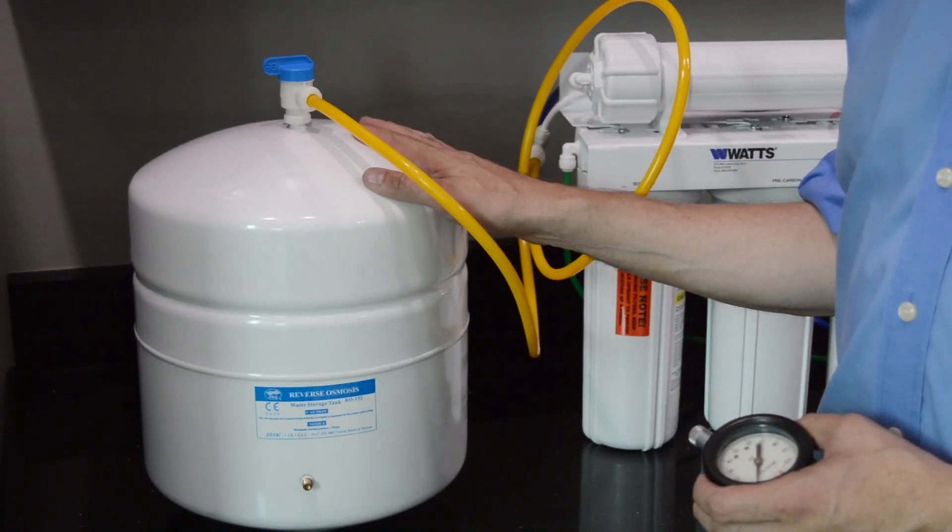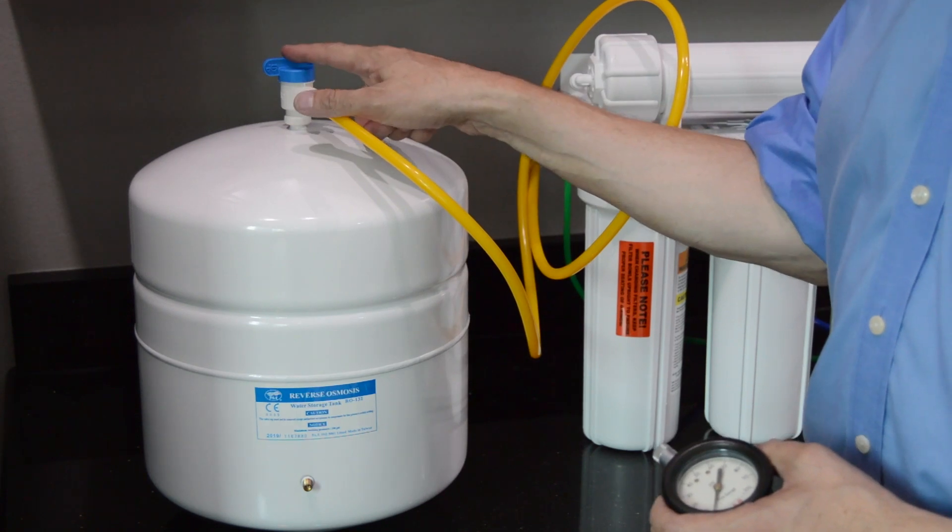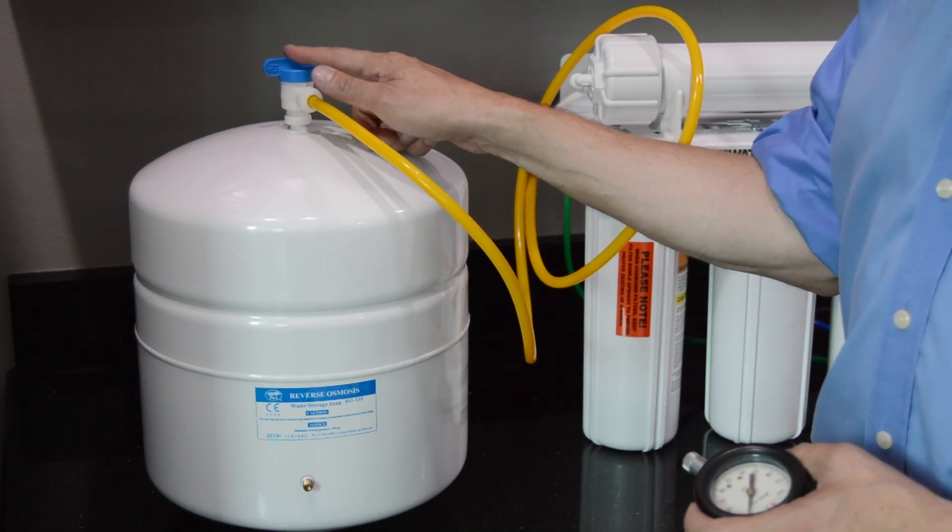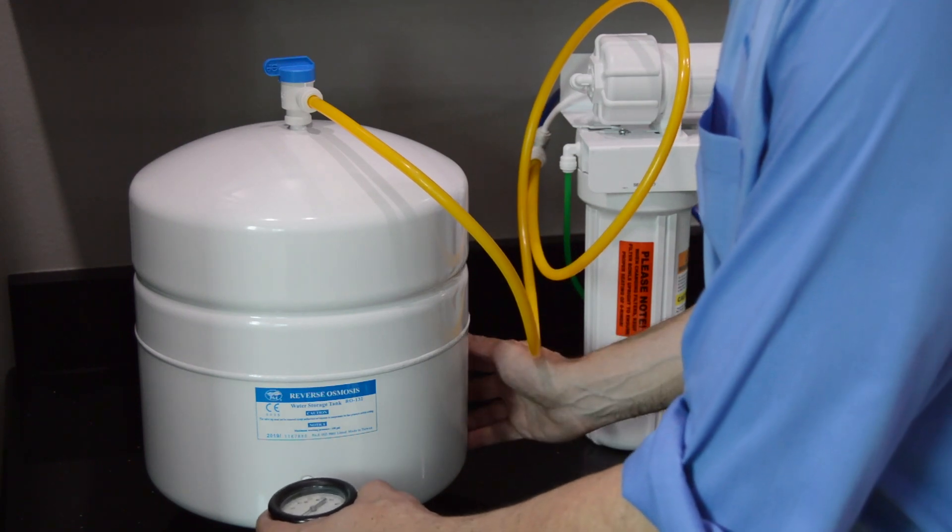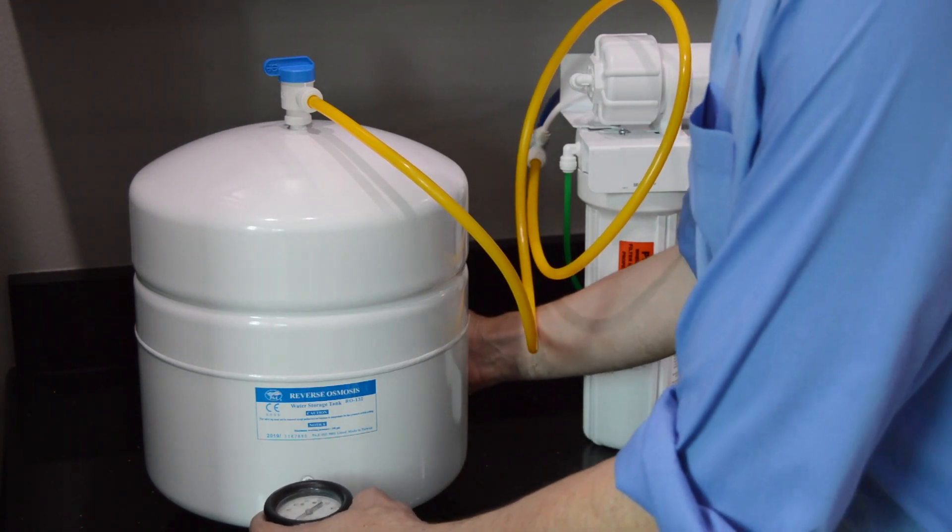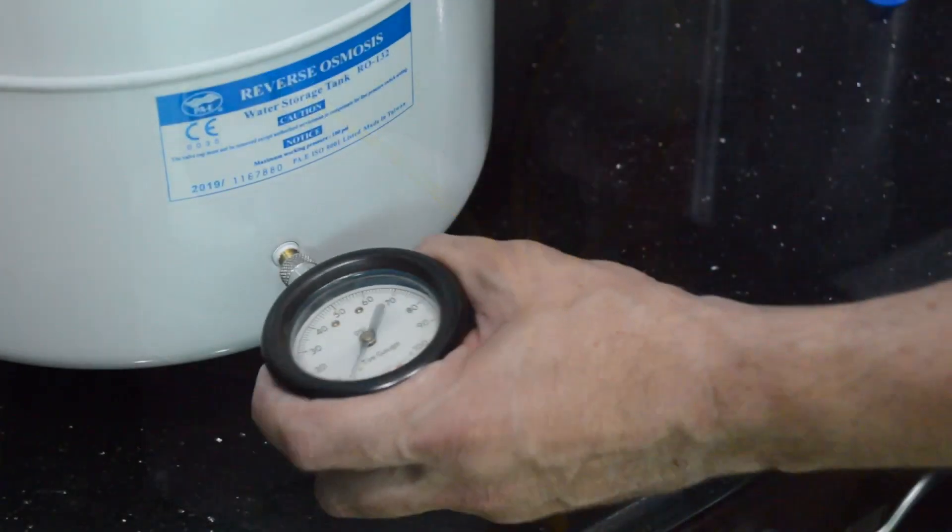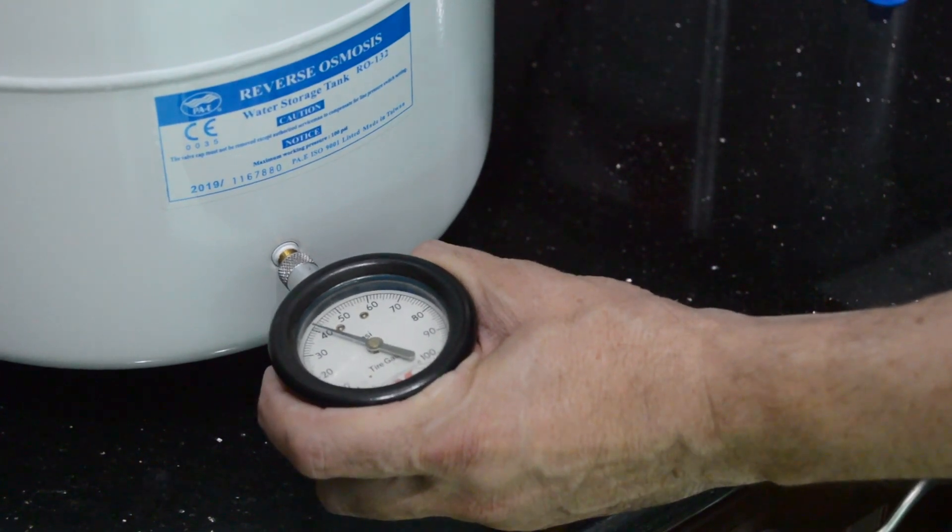Before connecting the pressure gauge, make sure that the valve at the top of the tank is turned off. Attach the pressure gauge to the Schrader valve to measure the tank pressure. A full tank should have a pressure of about 40 pounds per square inch.